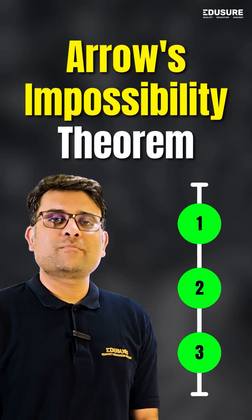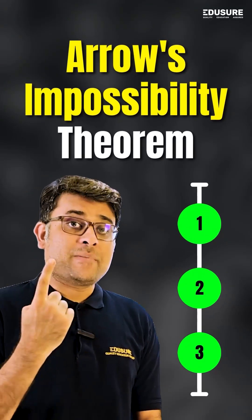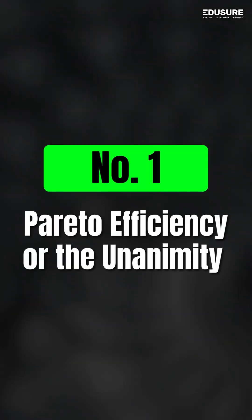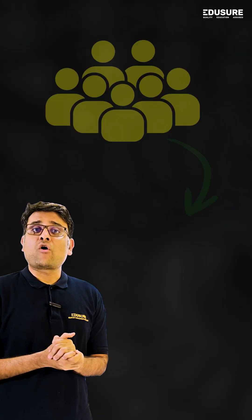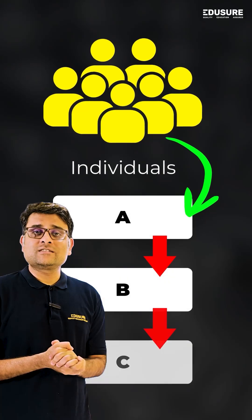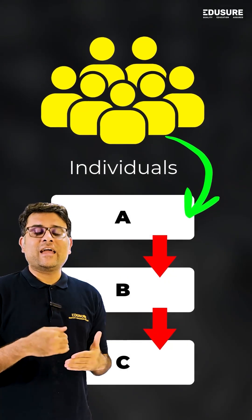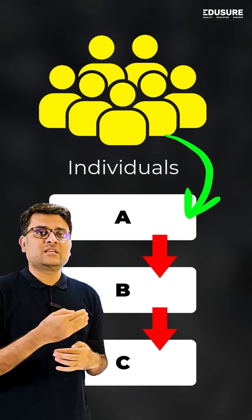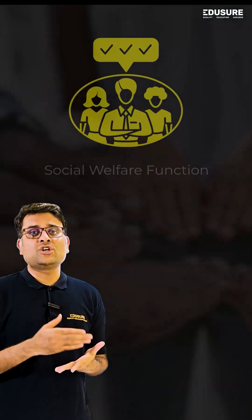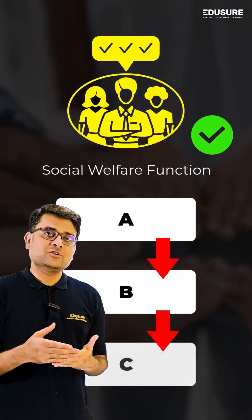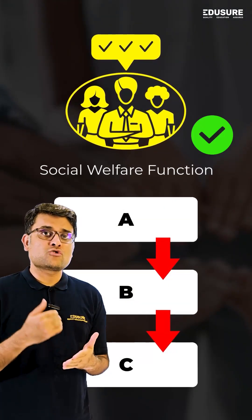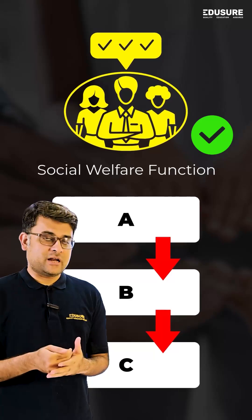I wrote the impossibility theorem in three aspects. The first is Pareto Efficiency, or Unanimity. If all individuals like A over B over C, then the social welfare function should also rank them accordingly.